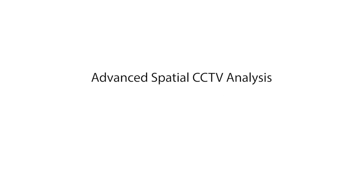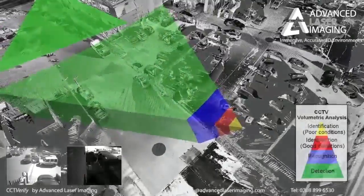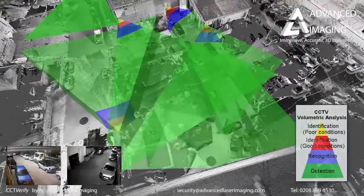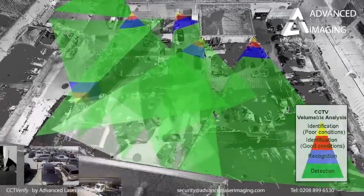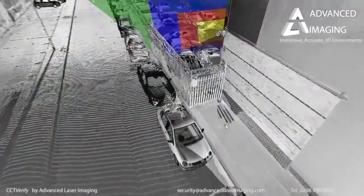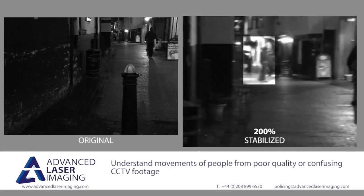Now let's look at Advanced Spatial CCTV Analysis. CCTV forms a critical part of most modern investigations. We have developed the capability to measure a camera's field of view using only an image from the camera and our 3D environments. We can easily assess multiple cameras and use our analysis to critically examine potential areas where a suspect or victim could have remained undetected. This can often be a piece of pivotal evidence in cases where CCTV hasn't fully captured events, and creates a more robust approach to evaluation of video footage.